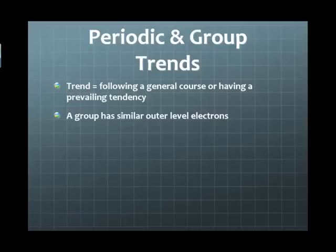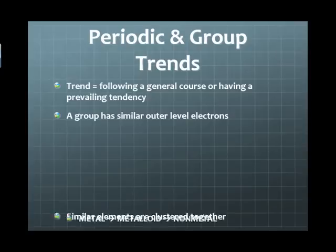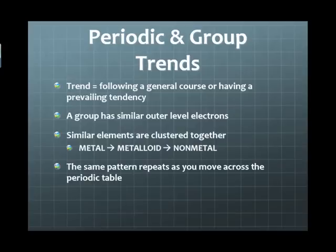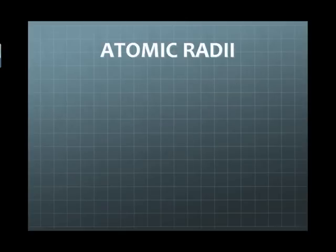This same kind of idea happens across the periodic table. You can predict what's going to happen as you go from the left side of the table to the right side, just as you can predict what's going to happen from the top of a group down to the bottom of a group. We're going to look at several different trends, and the first one is atomic radius.